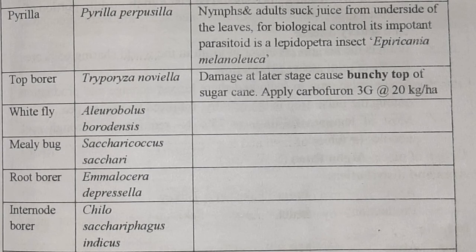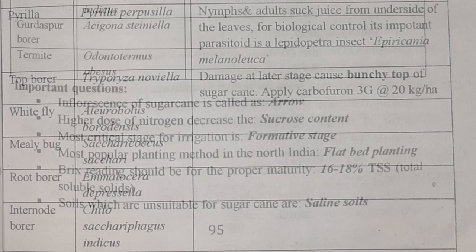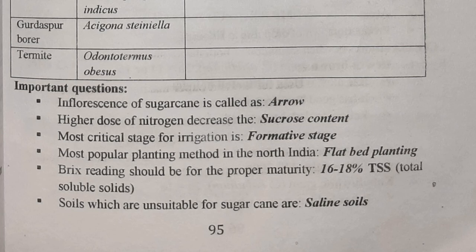Top borer, scientific name Tryporyza nivella — at a later stage, we can see bunchy top of sugarcane; treated with Carbofuran 3G at the rate of 20 kg per hectare. Other insect pests include: whitefly (Aleurolobus barodensis), mealybug (Saccharicoccus sacchari), root borer (Emmalocera depressella), internode borer (Chilo sacchariphagus indicus), Gurdaspur borer (Acigona steniella), and termite (Odontotermes obesus).